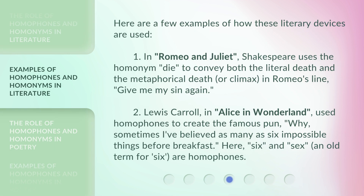Here are a few examples of how these literary devices are used. First, in Romeo and Juliet, Shakespeare uses the homonym 'die' to convey both the literal death and the metaphorical death — or climax — in Romeo's line, 'Give me my sin again.' Second, Lewis Carroll, in Alice in Wonderland, used homophones to create a famous pun: 'Why, sometimes I've believed as many as six impossible things before breakfast.' Here, 'six' and 'sex' — an old term for 'six' — are homophones.